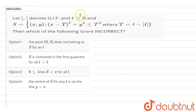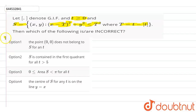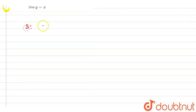Hello students. In this question we have given that t is greater than or equal to 0, and S is defined as: x minus t whole square plus y square, less than or equal to t square, where t equals t minus the greatest integer function of t. We need to check which of the following options is incorrect.